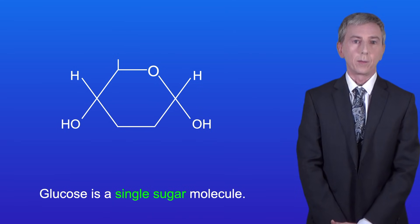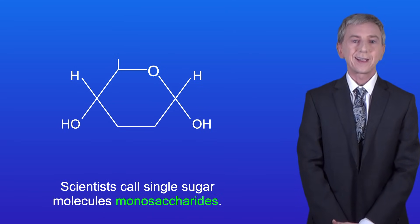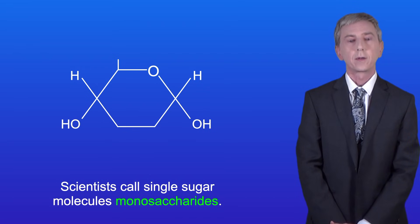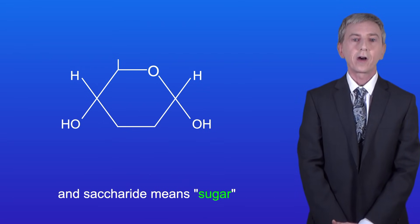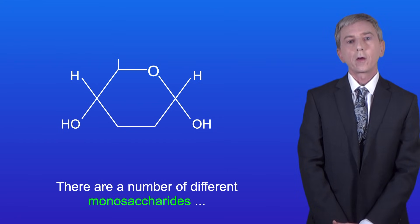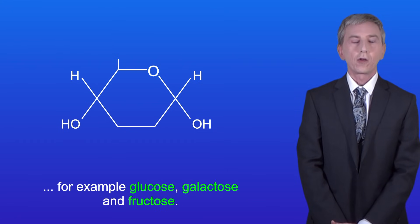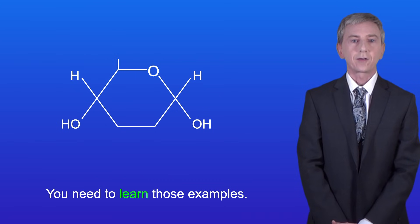Now glucose is a single sugar molecule. Scientists call single sugar molecules monosaccharides. Mono means one and saccharide means sugar. There are a number of different monosaccharides. For example glucose, galactose and fructose and you need to learn those examples.